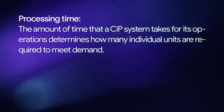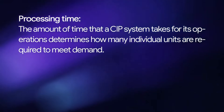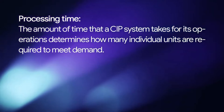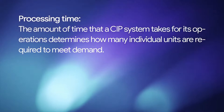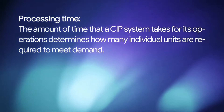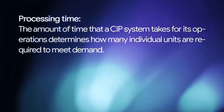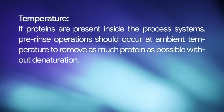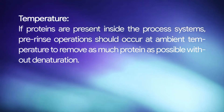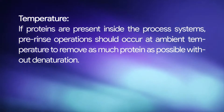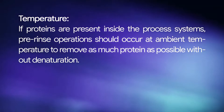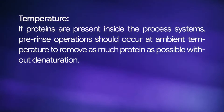Processing time: the amount of time that a CIP system takes for its operations determines how many individual units are required to meet demand. Temperature: if proteins are present inside the process systems, pre-rinse operations should occur at ambient temperature to remove as much protein as possible without denaturation.